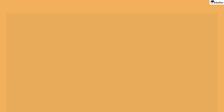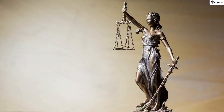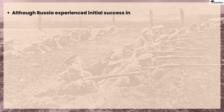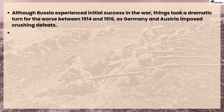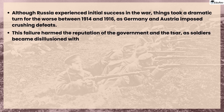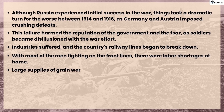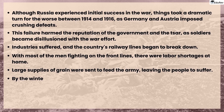Let's focus on the last topic: the First World War and the Russian Empire. As the winds of change swept through the country, the fate of the Russian Empire hung in the balance. Although Russia experienced initial success in the war, things took a dramatic turn for the worse between 1914 and 1916, as Germany and Austria imposed crushing defeats. This failure harmed the reputation of the government and the Tsar, as soldiers became disillusioned with the war effort. Industries suffered and the country's railway lines began to break down. With most of the men fighting on the front lines, there were labor shortages at home. Large supplies of grain were sent to feed the army, leaving the people to suffer. By the winter of 1916, bread riots were a common sight as people struggled to feed themselves and their families.